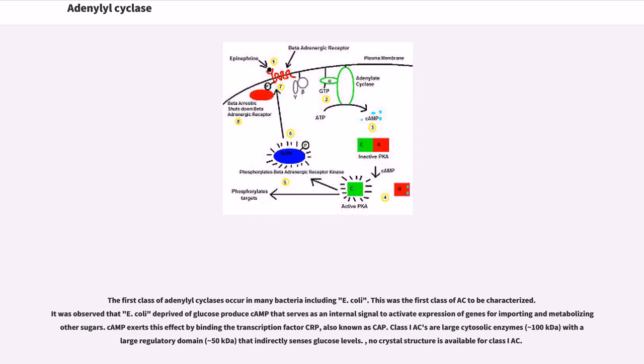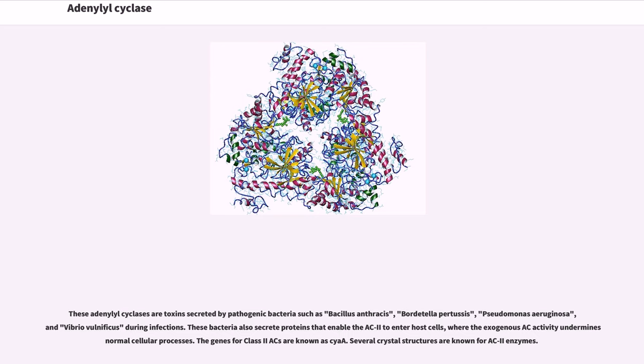No crystal structure is available for class I AC. These adenylyl cyclases are toxins secreted by pathogenic bacteria such as Bacillus anthracis, Bordetella pertussis, Pseudomonas aeruginosa, and Vibrio vulnificus during infections. These bacteria also secrete proteins that enable the AC2 to enter host cells, where the exogenous AC activity undermines normal cellular processes. The genes for class II ACs are known as CyaA. Several crystal structures are known for AC2 enzymes.